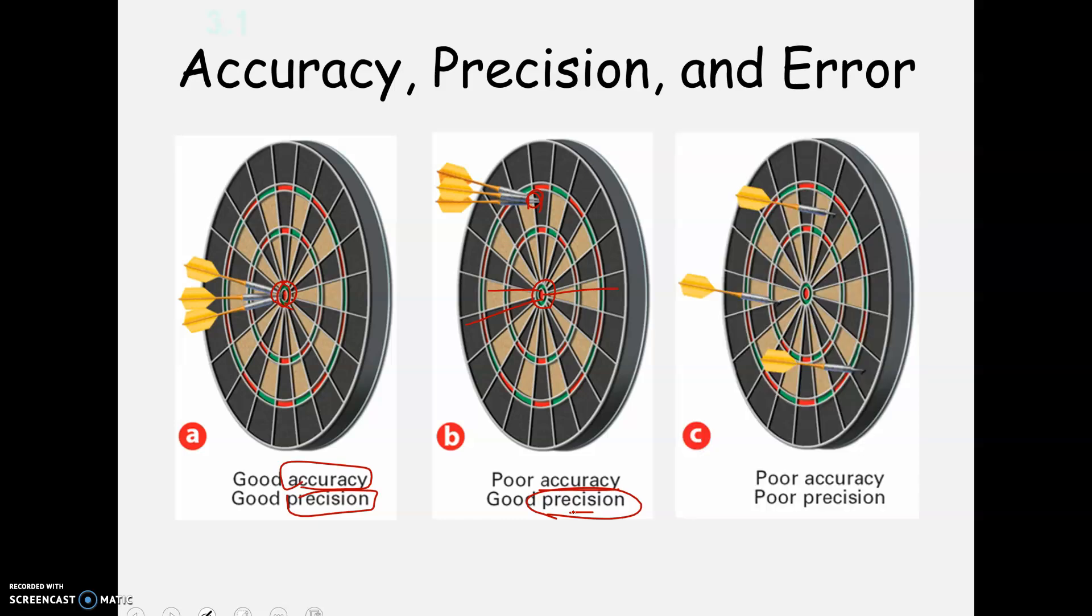But again, I don't know that we would do that to you on a test. And then here's poor, this would be me playing darts. Poor accuracy and poor precision. I totally miss the bullseye, and I can't even aim and hit the same place every time.